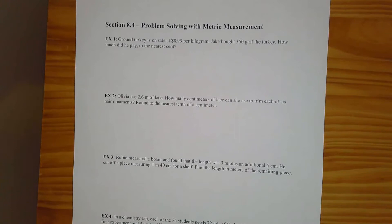Obviously I can't work through every one of your homework problems, so you're going to take the principles from what I'm talking about in this video and apply them to your homework problems this week. So the first one I have says ground turkey is on sale at $8.99 per kilogram. Jake bought 350 grams of the turkey. How much did he pay to the nearest cent?